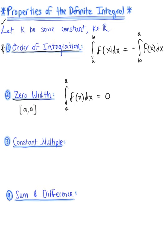The next property is the constant multiple property, which we're very familiar with. If we have the definite integral from a to b of a constant k multiplied by the integrand f of x dx, we can pull that constant k to the outside of the definite integral to help simplify the evaluation process.